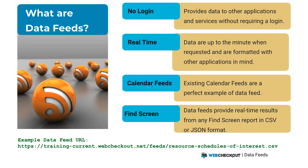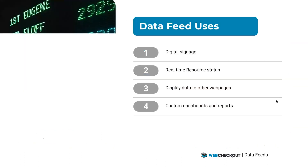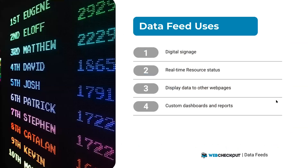Data feeds take the same concept of calendar feeds and provide real-time results from any find screen report in either a CSV or JSON format. You can see here an example of a data feed URL in CSV format. Our development team creates this URL based on the specified report in Web Checkout. Data feed URLs are not readily available within the application — it is custom work.